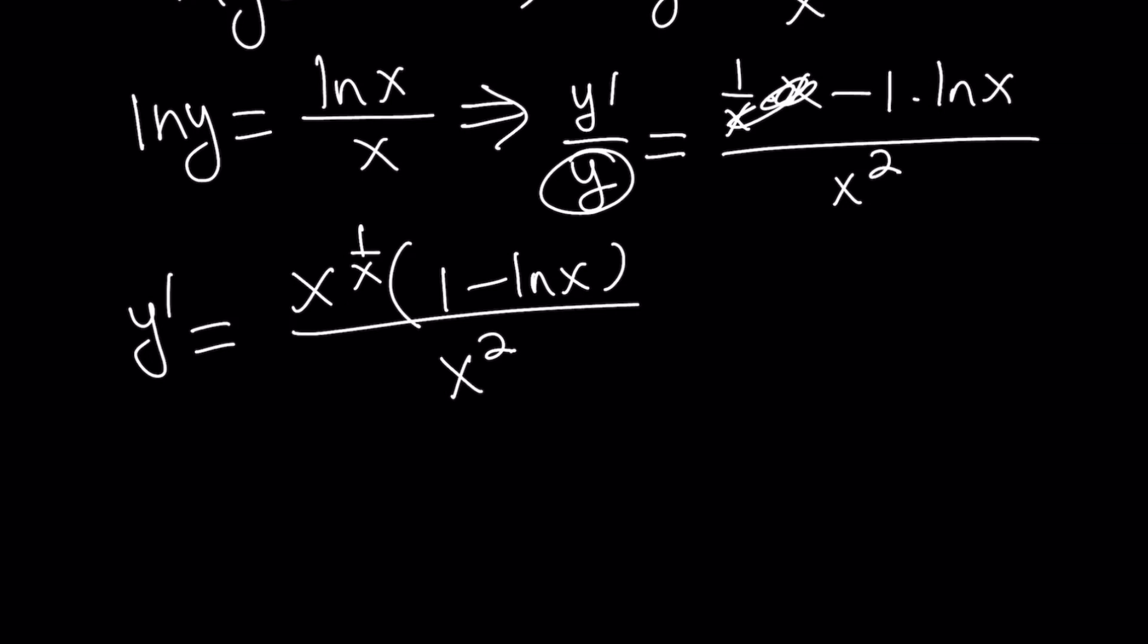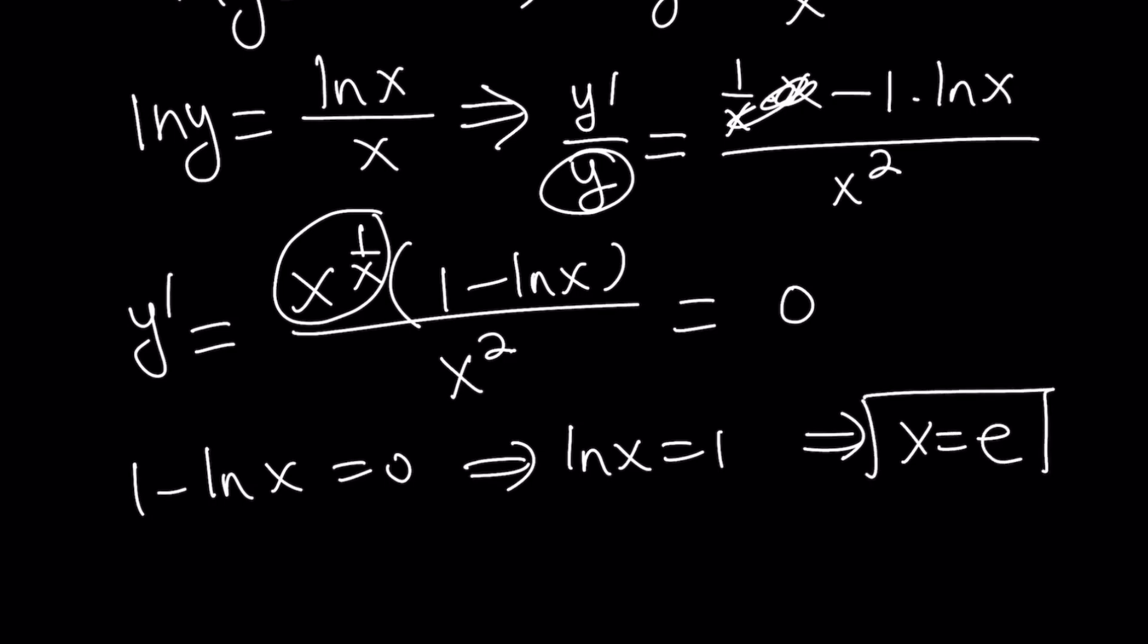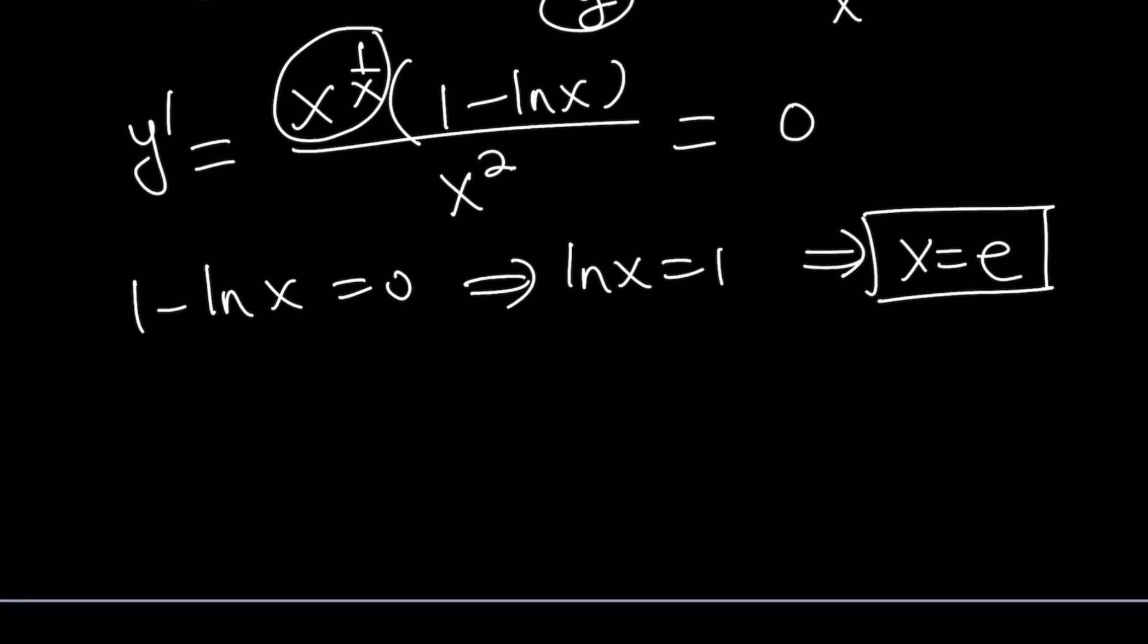I want to find the critical points. Does this function have any horizontal tangents? In other words, the derivative changes from positive to negative or negative to positive. Set it equal to 0. From here, x to the power 1 over x can never be 0. Even at 0, it kind of goes crazy. 1 minus ln x can be 0, and from here we get ln x equals 1, which implies x equals e, Euler's number, that famous 2.7 something.